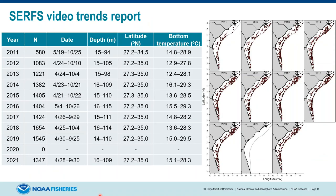A bit about the background sampling information that went into these indices of abundance. The main take-home message is that spatial and temporal footprints are pretty similar among years — depths and bottom temperatures are consistent. This is important because we're also controlling for these things in the standardization, with the hope that trends in abundance are not confounded with any changes in sampling.